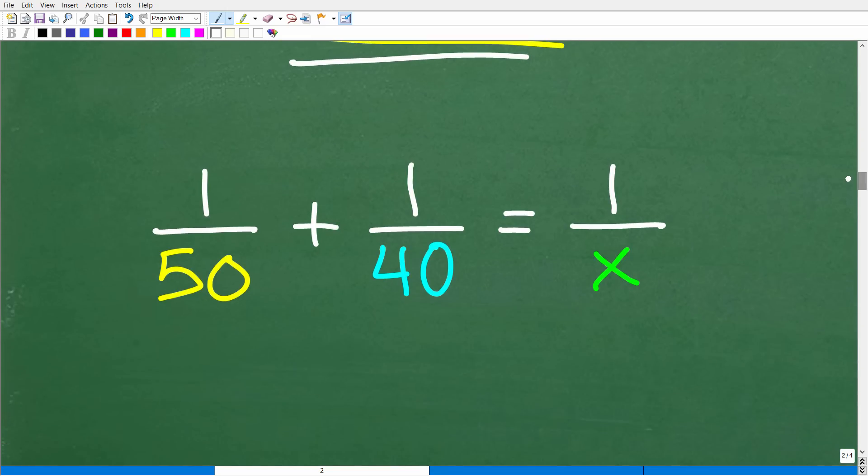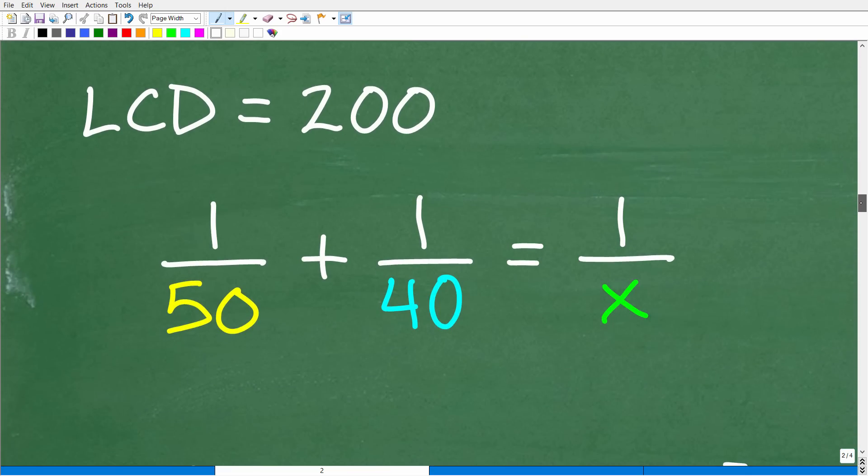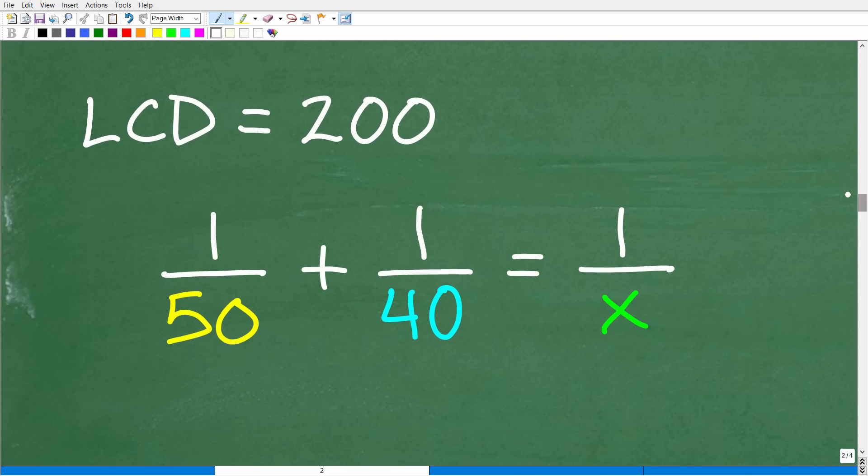So here's the equation. We have one over 50 plus one over 40 is equal to one over X. We would classify this type of equation as a rational equation. It involves fractions. That word rational means fractions. So how can we solve this equation? Well there's a few different approaches.